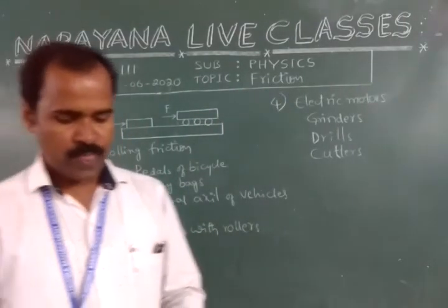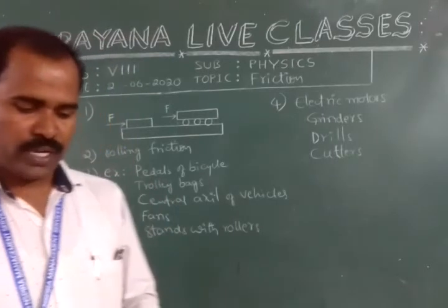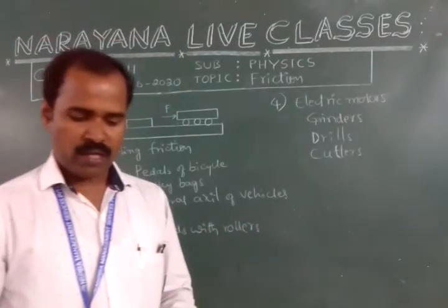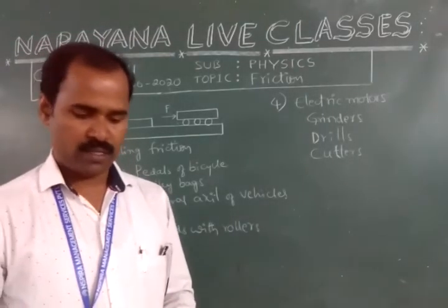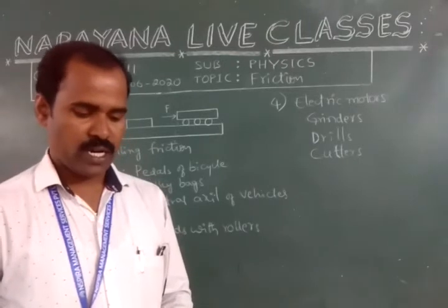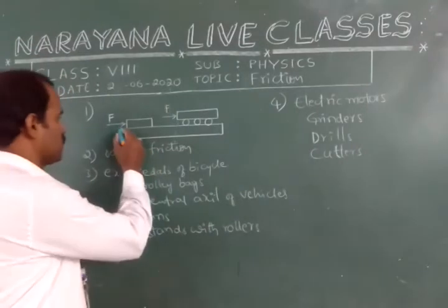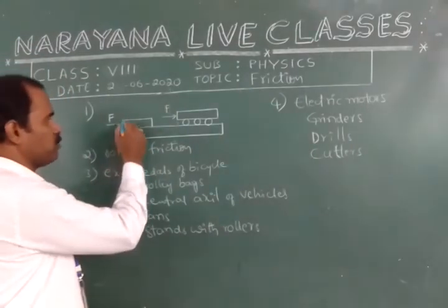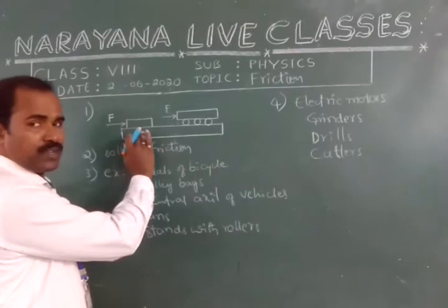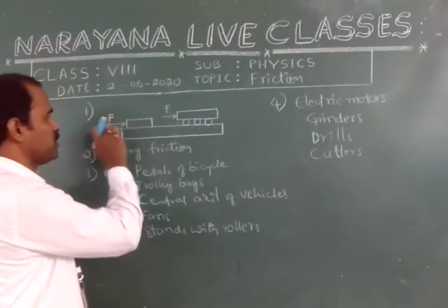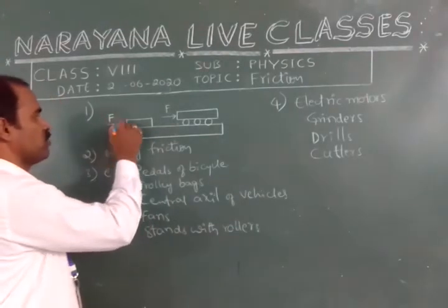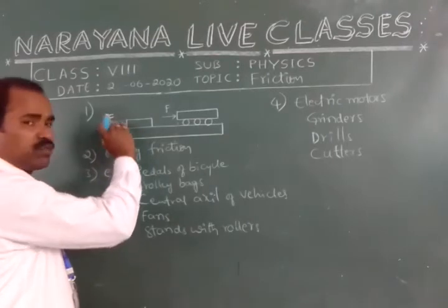In that first question, draw a diagram showing a book or a block sliding on the table surface and also rolls on the rollers placed on the table. This is the diagram for first question. A book is placed on the table surface. If you push with some force, the book will slide.